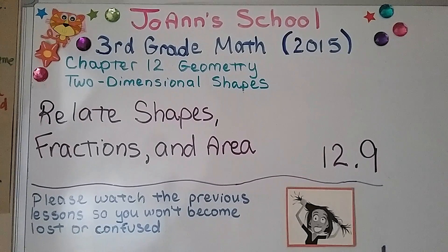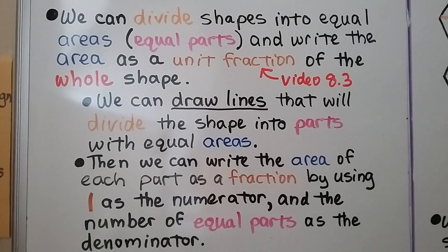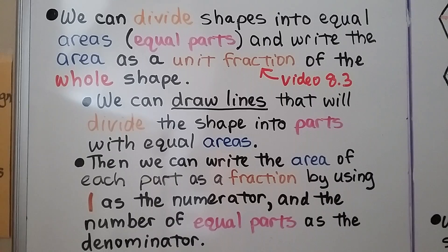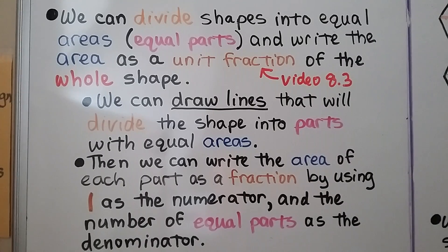Lesson 12.9: Relates Shapes, Fractions, and Area. We can divide shapes into equal areas — that's equal parts — and write the area as a unit fraction of the whole shape. We learned about unit fractions back in Lesson 8.3, linked in the description. We can draw lines to divide a shape into parts with equal areas, then write the area of each part as a fraction using 1 as the numerator and the number of equal parts as the denominator.